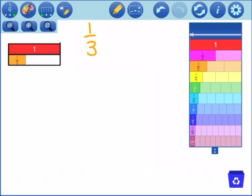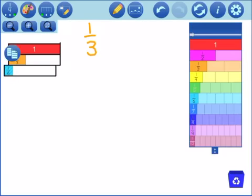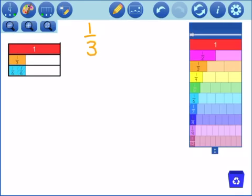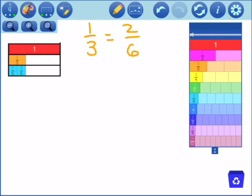I want to find out what's equal to this one third. Now, I know that 6 and 3 are multiples of each other. So let's see if I can do this with sixths. Oh, and look at that. 2 sixths line up perfectly with 1 third. So that means 1 third and 2 sixths are equivalent.